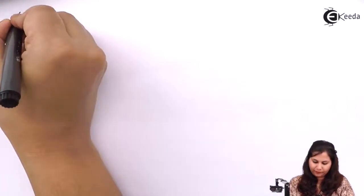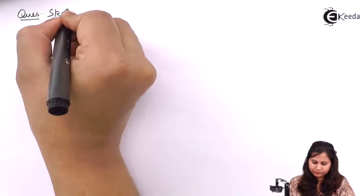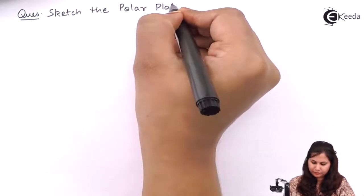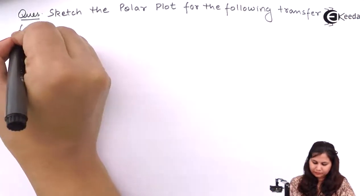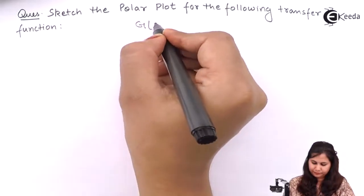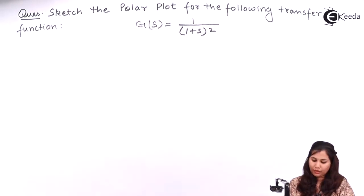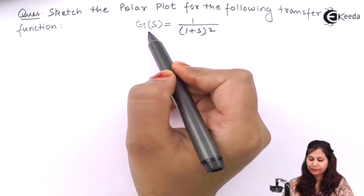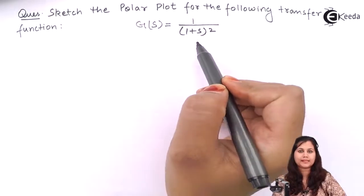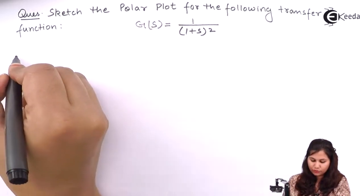Hello friends. In this video we are going to solve a problem on how to sketch the polar plot of a system whose open loop transfer function is given to us. Our problem is to sketch the polar plot for the transfer function G(s) = 1 / (1 + s)². Let's try to solve this problem.